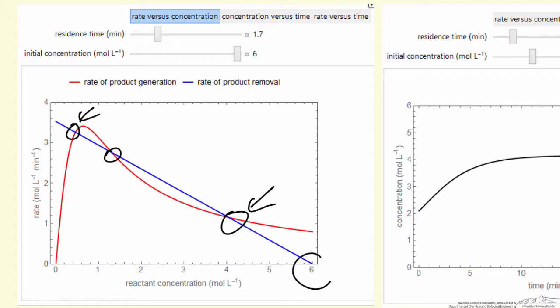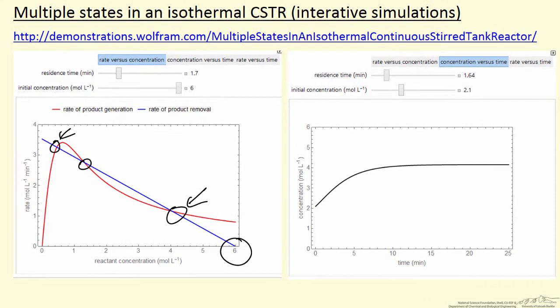The feed concentration is 6 moles per liter, but the initial concentration, when we select this, then we can change the initial concentration. We can't change the initial concentration when we selected this button.